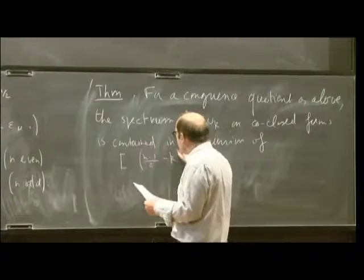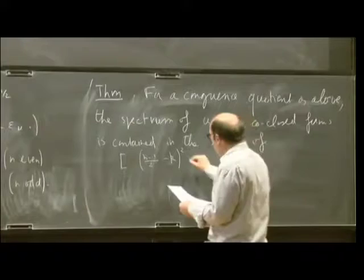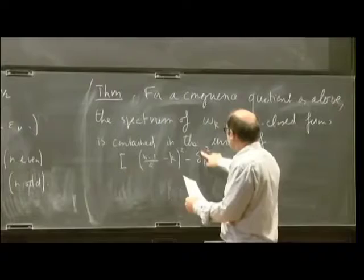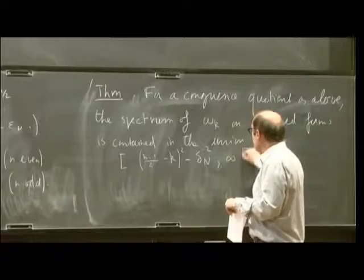So the more you get forms of higher degree, the more your forms tend to get tempered, so you are higher, so we get this. And then we have this fraction term here, delta N to the square, up to infinity.